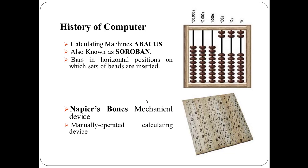The first one is the Calculating Machine Abacus, which is also known as Soroban. Abacus was the first mechanical calculating device for counting large numbers. The word Abacus means Calculating Board.